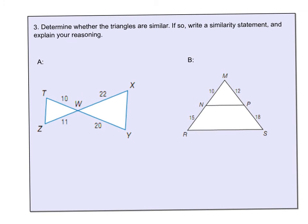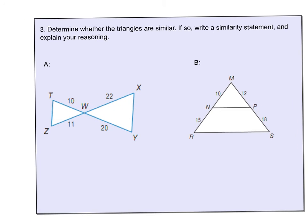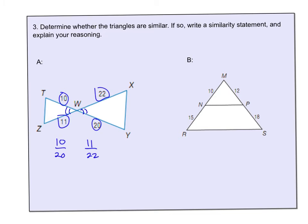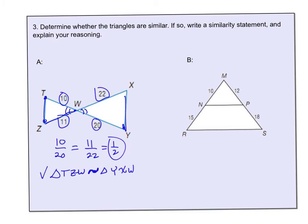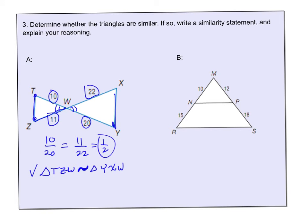Now let's look at the SAS example. Going 10 over 20 equals 11 over 22 — both equal one half. The two angles at the intersection are vertical angles, so they're equal. Therefore, triangle TZW is similar to triangle YXW. Be very careful about how you write the similarity statement so that vertices correspond correctly: T matches to Y, Z matches to X, and W matches to W.